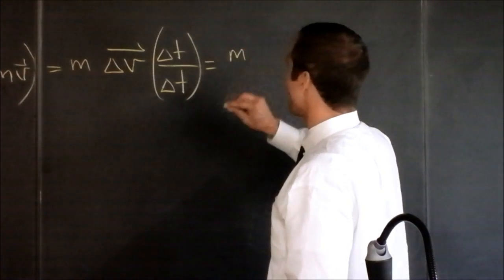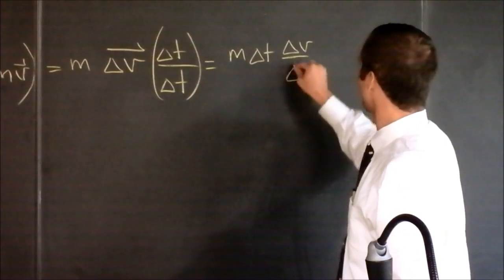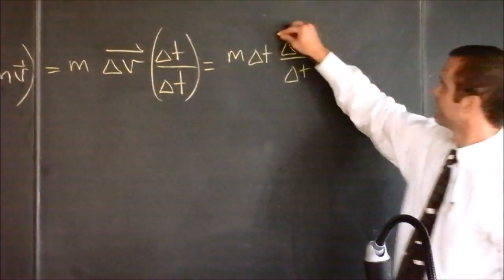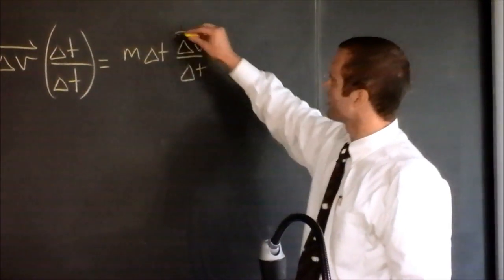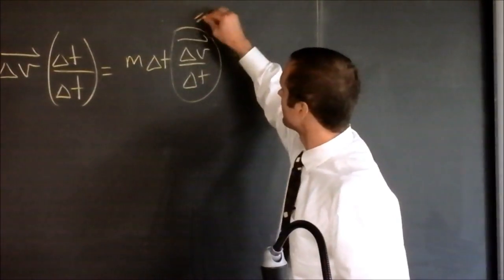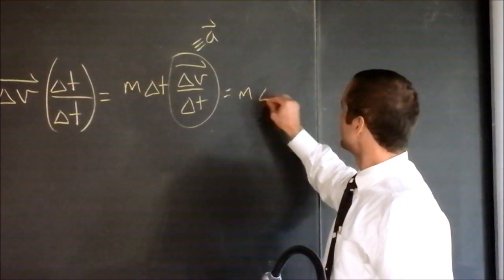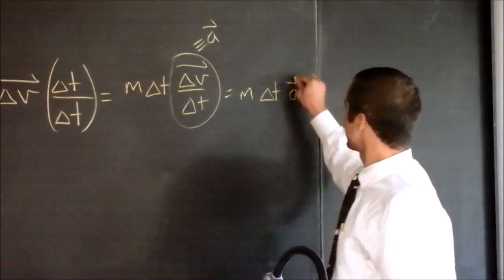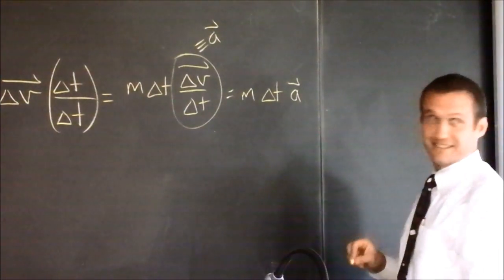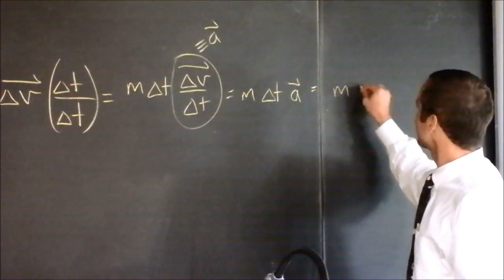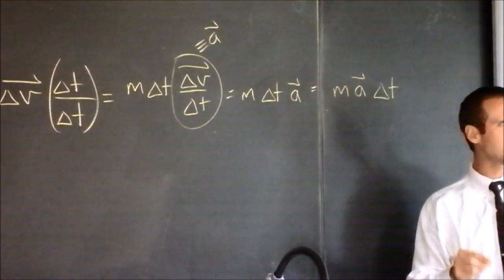I can write this as m times delta t times delta v over delta t. And you know what delta v over delta t is — it is the acceleration. It's the definition of the acceleration vector. So I've got m times delta t times the acceleration vector. This is mass times acceleration times delta t.